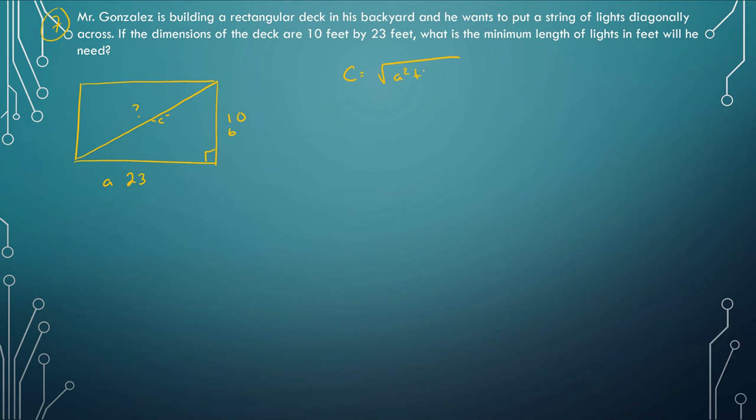We substitute in what we know: a is 23, b is 10. So 23 squared or 23 times 23 is 529, 10 squared is 100, so we add those together - that's 629. I believe that's as far as we can take it. So here we can say I'm going to need about the square root of 629, or the square root of 629 is about 25 feet. So we can say about 25 feet worth of lights.